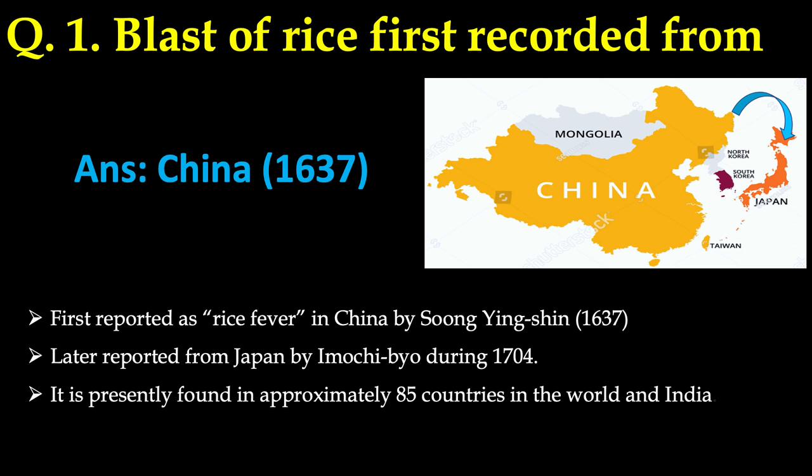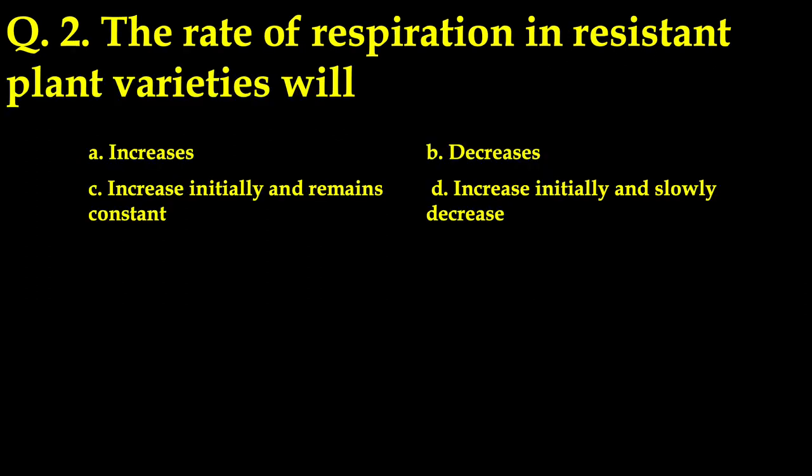Interestingly, the same disease was later reported from Japan by Omoji Bio during 1704. It is presently found in approximately 85 countries of the world including India. Our next question is: the rate of respiration in resistant plant varieties will — there were four options.